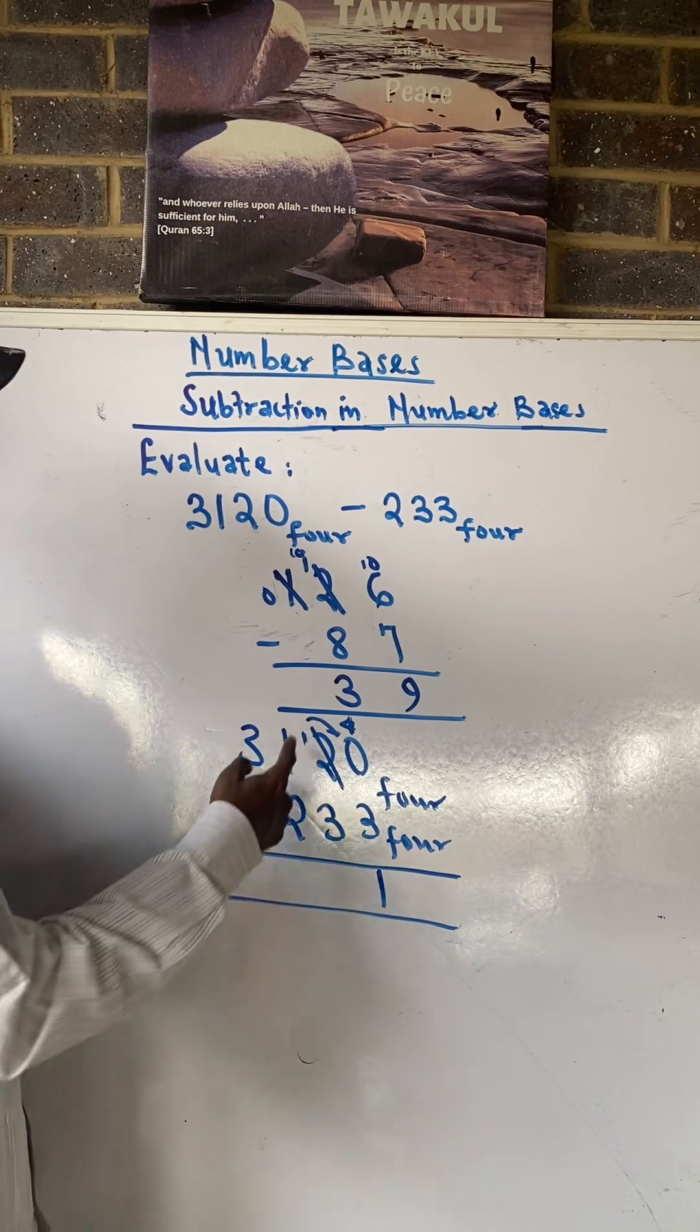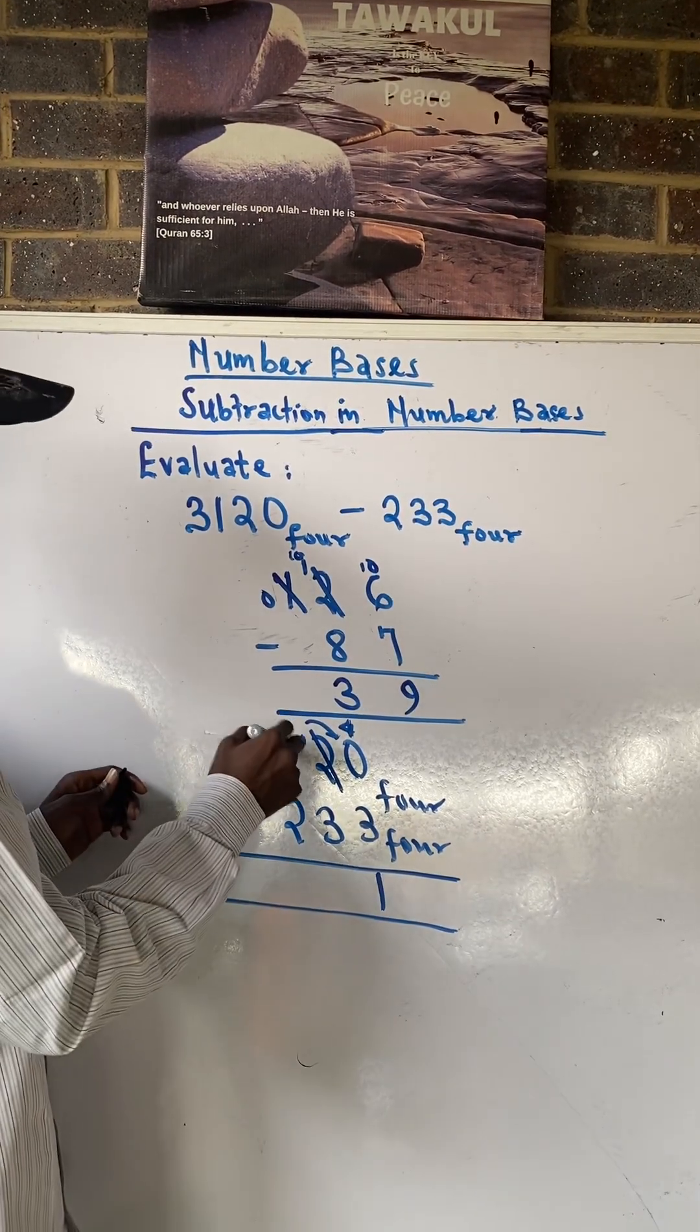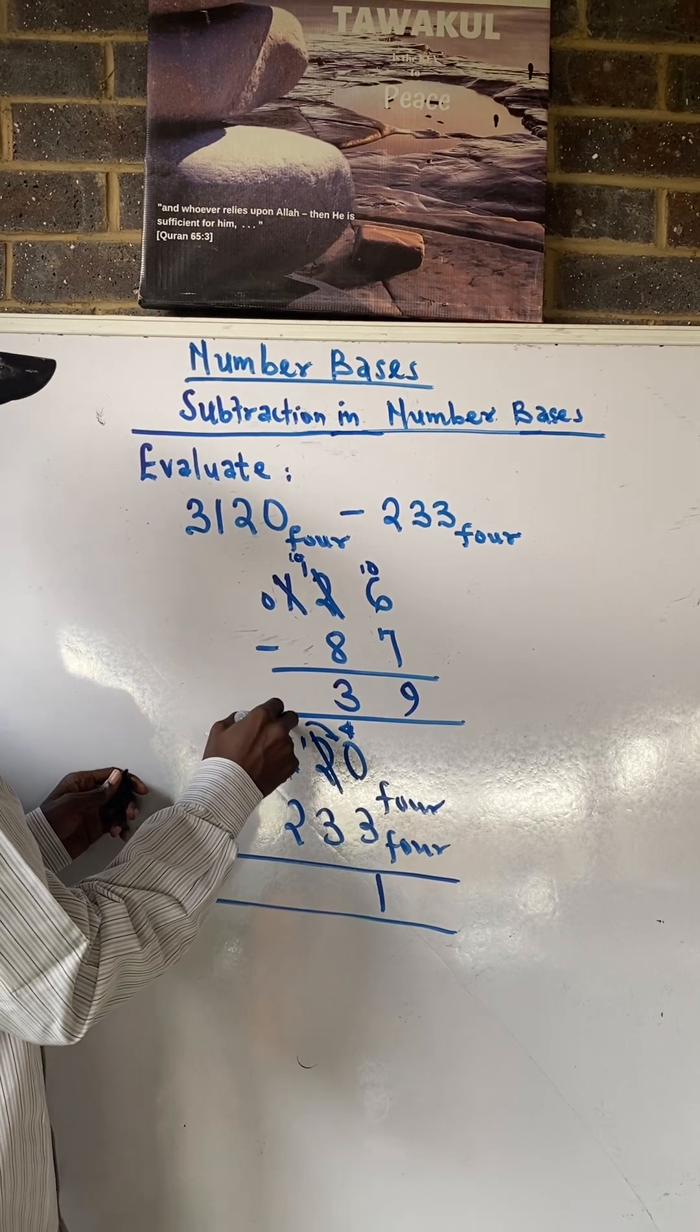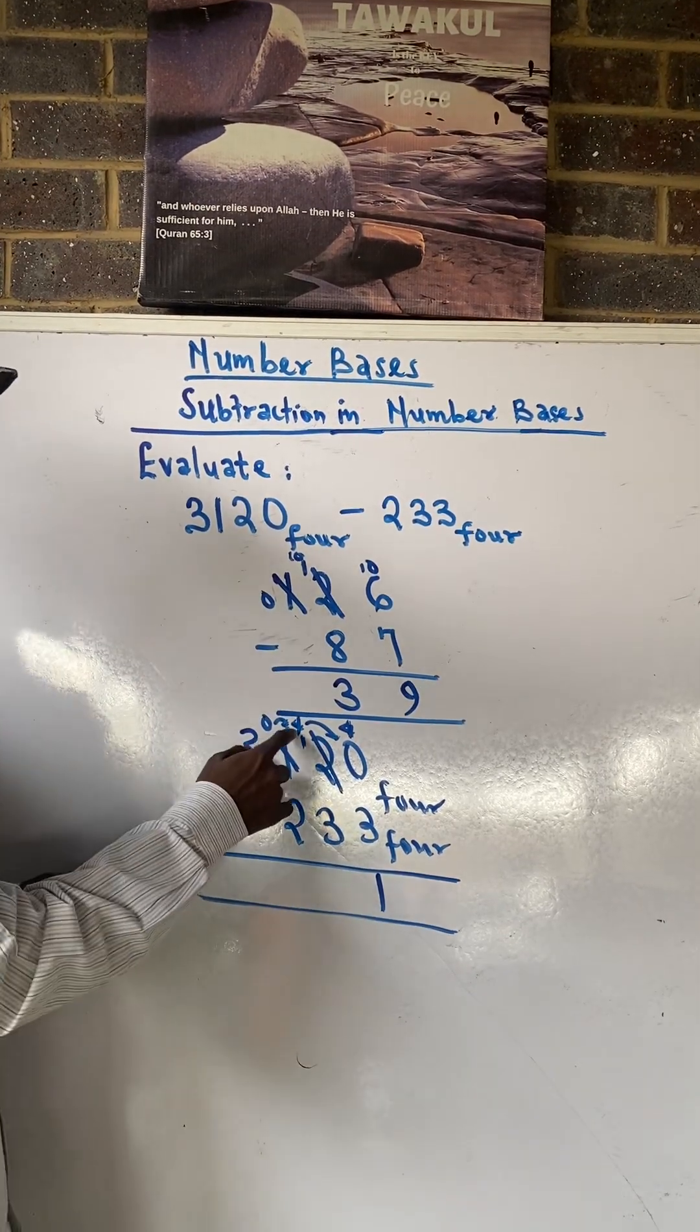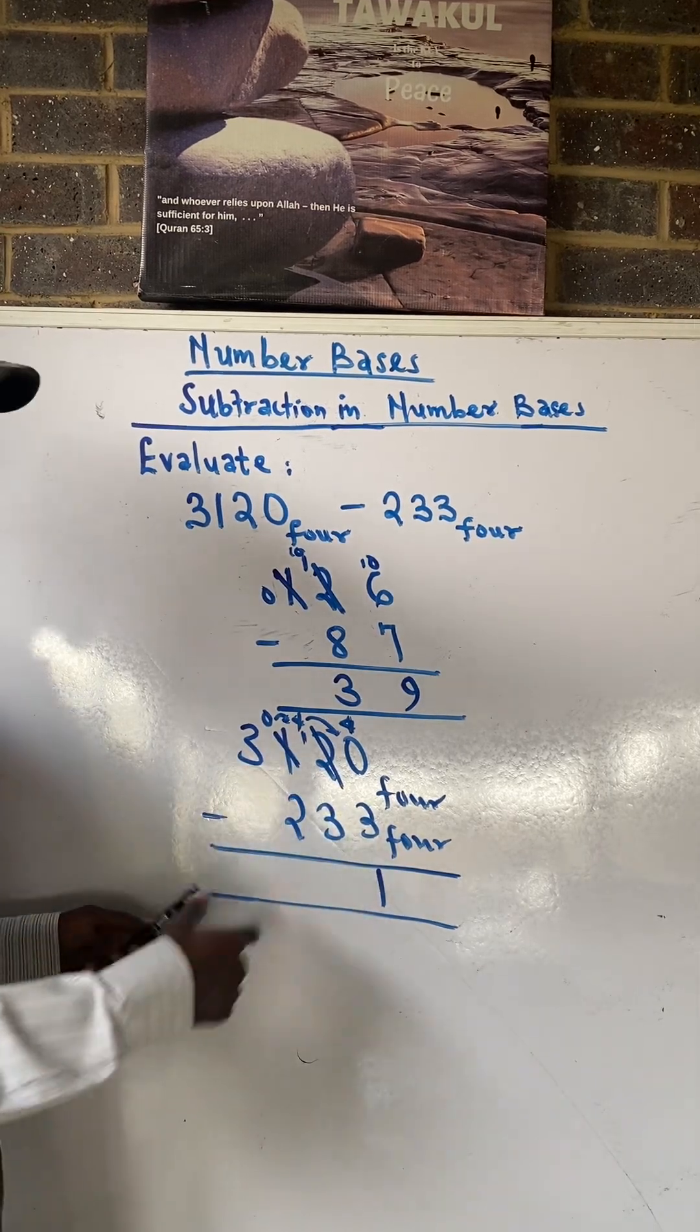Now we have 1 left here, we have to still borrow to this place. This remains 0, borrow 1 to this place becomes 4 here. 4 plus 1 that will give me 5, then 5 minus 3 that will give me 2.